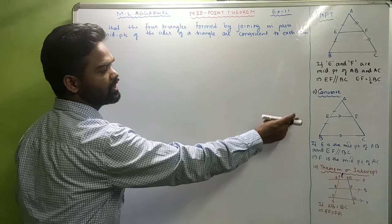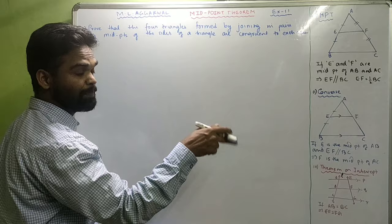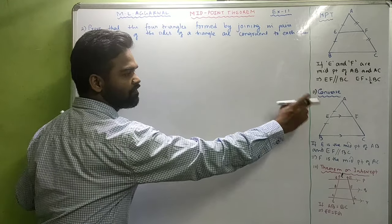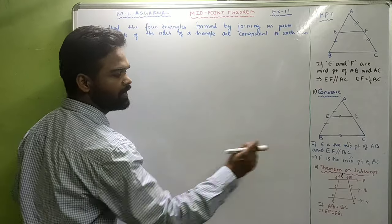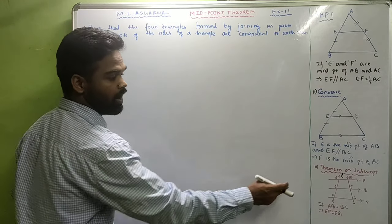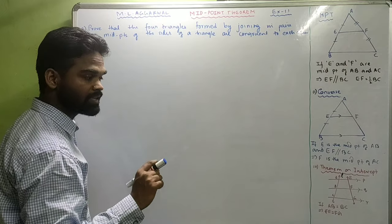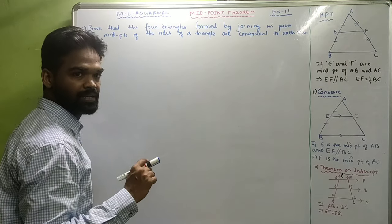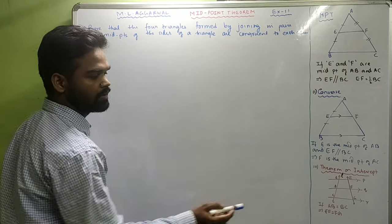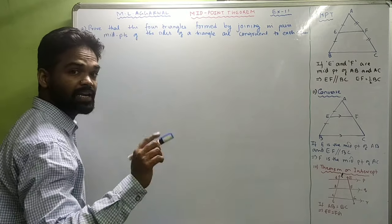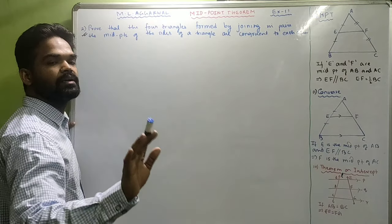The converse of the theorem was: in a triangle ABC, if E is the midpoint of AB and EF is parallel to BC, then F will be the midpoint of AC. And there was one more theorem on intercept which says: if a transversal makes equal intercepts on three or more parallel lines — the transversal is L, there are three parallel lines P, Q, R, and AB equals BC — then any other transversal you draw will also make equal intercepts.